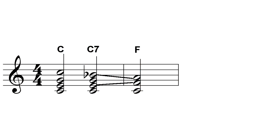This musical fragment shows how adding a seventh helps propel the C chord to the F that follows. The top notes in the chords form a simple descending melody line that gives direction. The notes within the C seventh chord lead nicely to notes in the F chord - the B flat in the C seventh chord leads strongly to the A note, and the E note leads strongly to the F that follows.